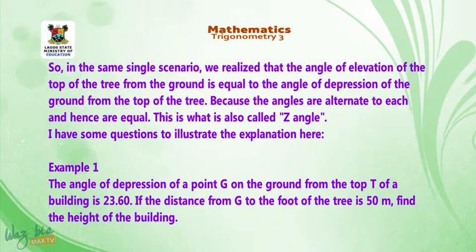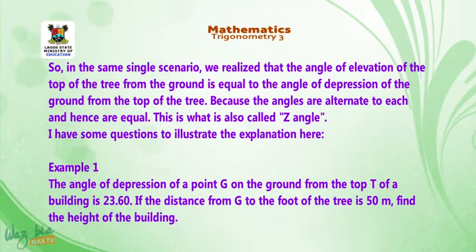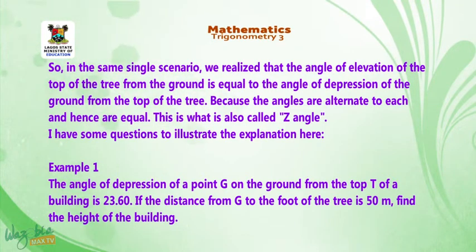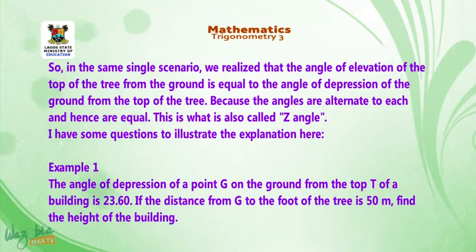I have some questions to illustrate the explanation. Example one: the angle of depression of a point G on the ground from the top T of a building is 23.6 degrees. If the distance from G to the foot of the building is 50 meters, find the height of the building. Solution: